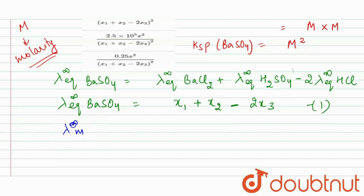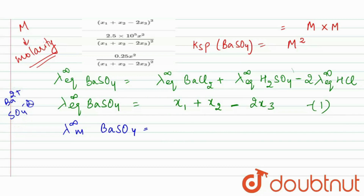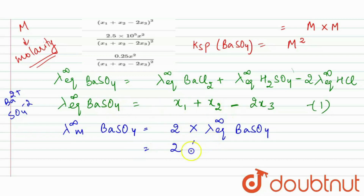We know that the molar conductivity at infinite dilution for BaSO₄ equals the n-factor (equivalence factor) of the electrolyte multiplied by the equivalent conductivity at infinite dilution. For BaSO₄, the n-factor is 2, because Ba has a +2 charge and SO₄ has a −2 charge. So the molar conductivity equals 2(x1 + x2 − 2x3).